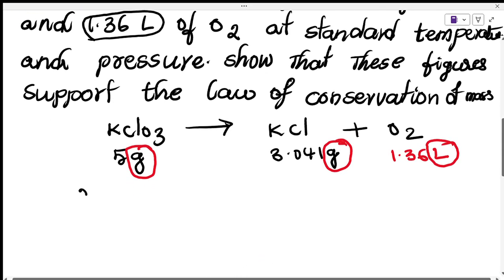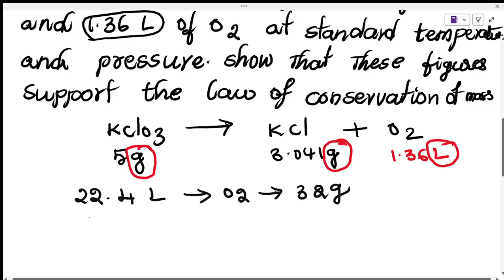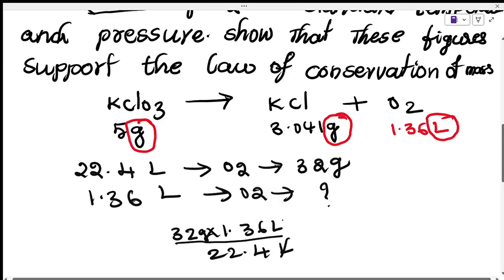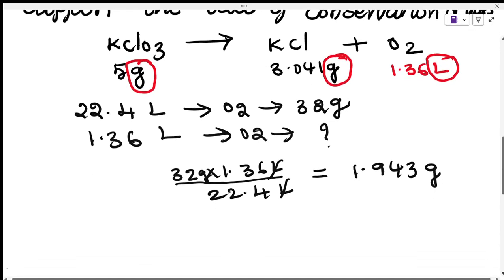We know that 22.4 liters of O2 gas has a mass of 32 grams. So 1.36 liters of oxygen has a mass of 32 times 1.36 divided by 22.4. The liters cancel out, and by simplification you get 1.943 grams of oxygen.